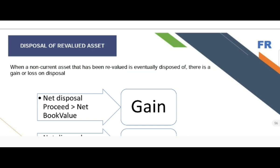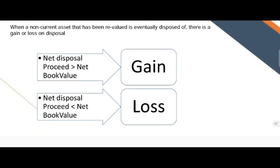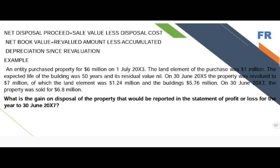Now, the disposal of a revalued asset. When a non-current asset that has been revalued is eventually disposed of, there is a gain or loss on disposal. To calculate the gain or loss, compare the net disposal proceeds with the net book value. If net disposal proceeds exceed book value, it is a gain; if proceeds are less than book value, it is a loss. For example, an entity purchased property for $6 million on 1st July 2003.